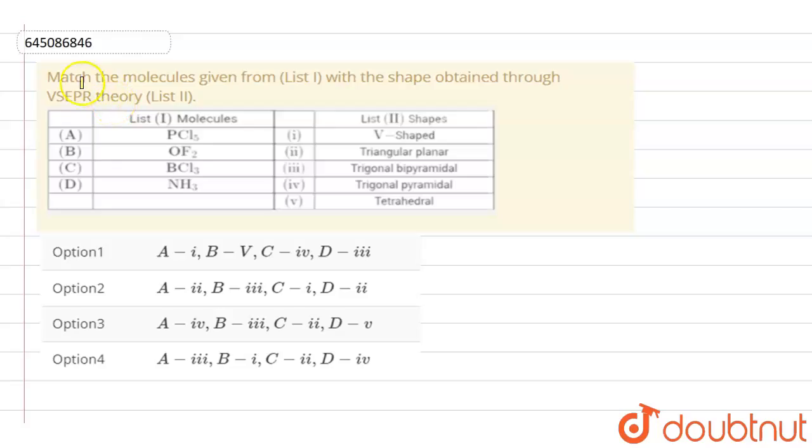Hello student. The question is: match the molecules given from list 1 with the shape obtained through VSEPR theory in list 2. Here is the list of molecules: PCL5, OF2, PCL3, ammonia, and the list of shapes: V-shaped, triangular planar, triangular bipyramidal, triangular pyramidal, and tetrahedral.